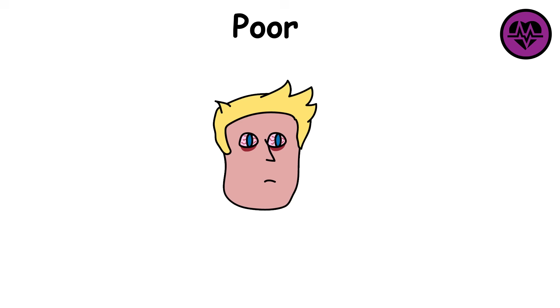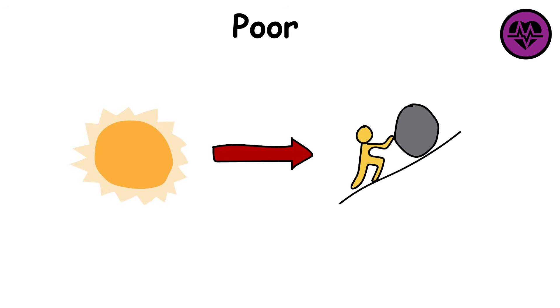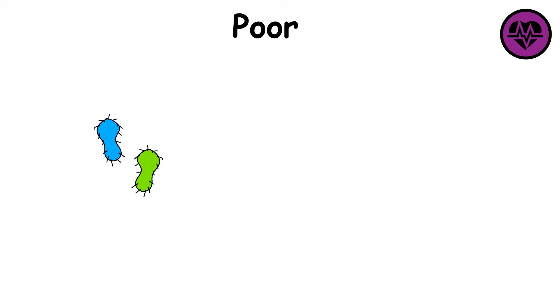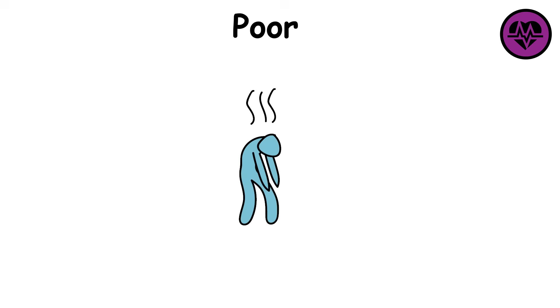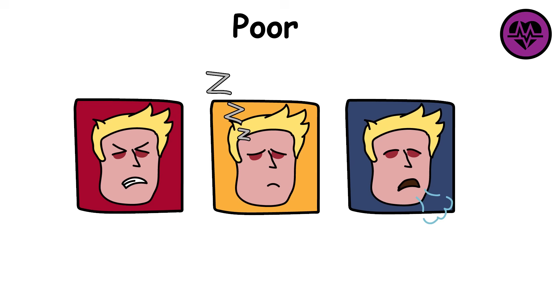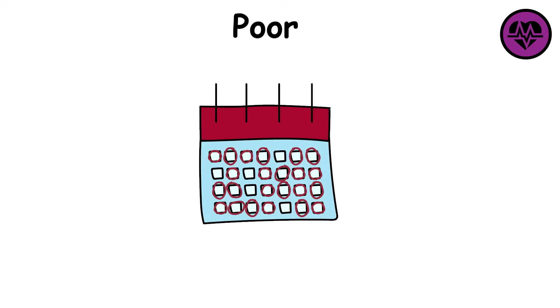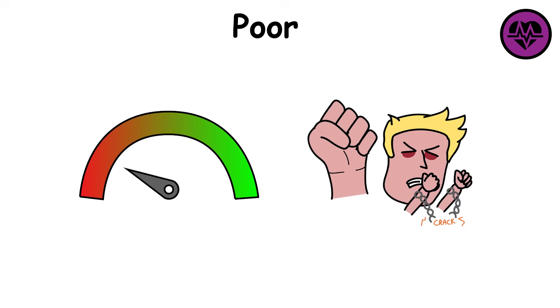Poor health. Poor health is the level where daily life is defined by constant struggle. At this stage, chronic illness, disability, or untreated conditions make even simple activities exhausting. Pain, fatigue, or shortness of breath may appear almost every day, limiting independence and freedom.